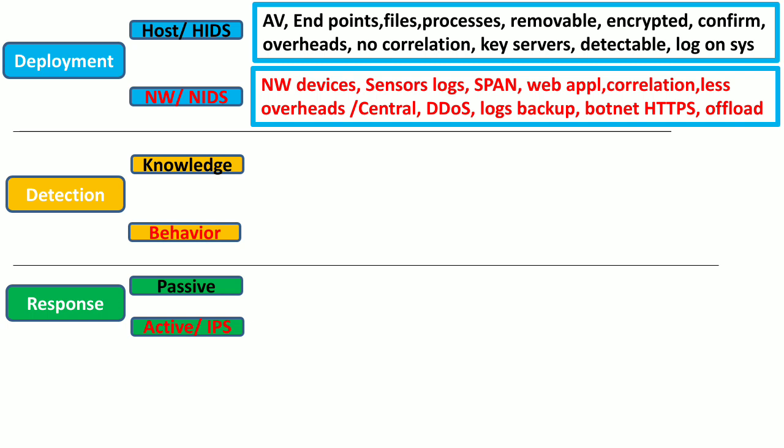The network-based Intrusion Detection System uses sensors to collect log data from network devices such as switches and firewalls. It also collects network traffic using port mirroring, where the entire traffic processed by a switch is mirrored to a specific port on that switch. This port mirroring is also known as SPAN, or Switched Port Analyzer port, which is a Cisco term.